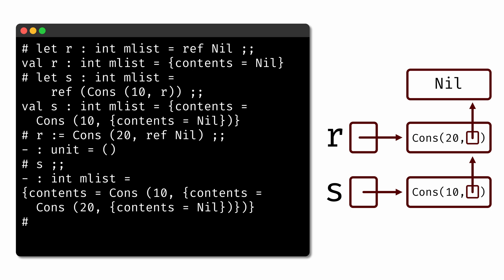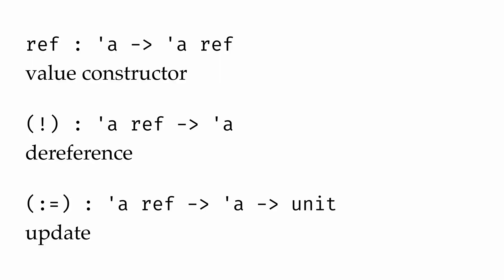So by defining types that use mutable references like this, we enable ourselves to build all kinds of data structures that rely on storing some kind of internal state that we might later want to be able to change. Imperative programming, which is all about this idea of state change, ends up being a powerful tool for solving a wide variety of problems.